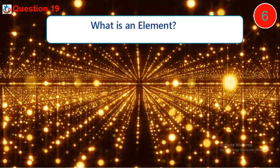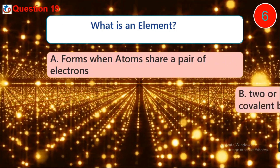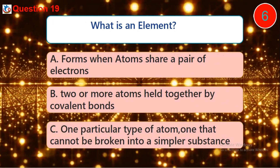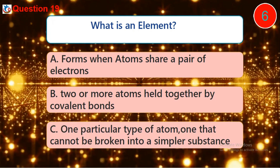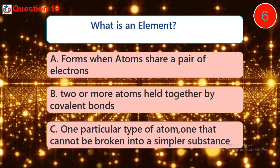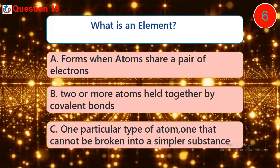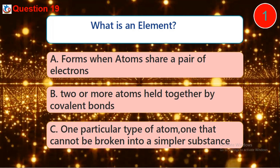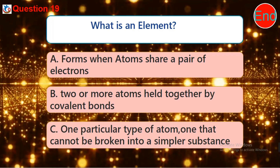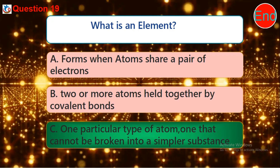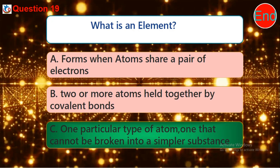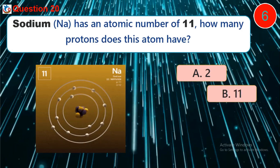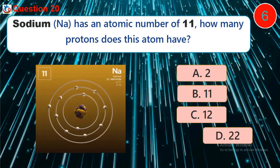Question 19: What is an element? A) Forms when atoms share a pair of electrons. B) Two or more atoms held together by covalent bonds. C) One particular type of atom — one that cannot be broken into another substance. Question 20: Sodium has an atomic number of 11. How many protons does this atom have? A) 2, B) 11, C) 12, D) 22.